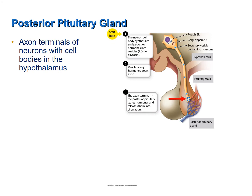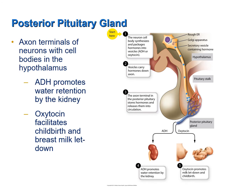When the neuron produces an action potential, instead of releasing neurotransmitters, the axon releases the hormones antidiuretic hormone and oxytocin. These hormones are released into a capillary bed in the posterior pituitary gland that leads to venules, venules to veins, and then into the systemic circulation where they are carried throughout the body. Antidiuretic hormone promotes water retention by the kidney, and oxytocin is involved in smooth muscle contractions associated with childbirth and breast milk letdown.